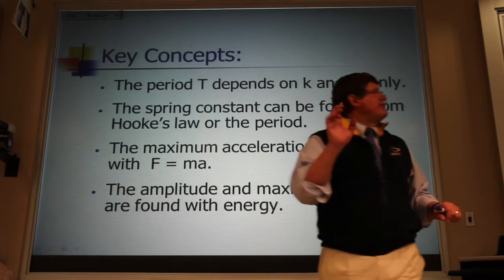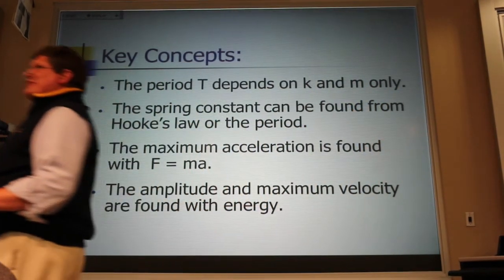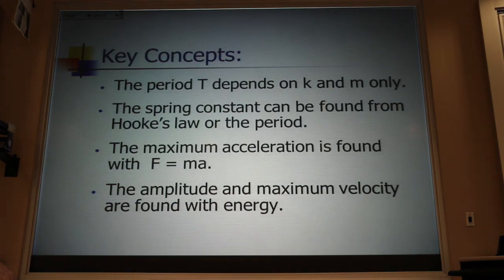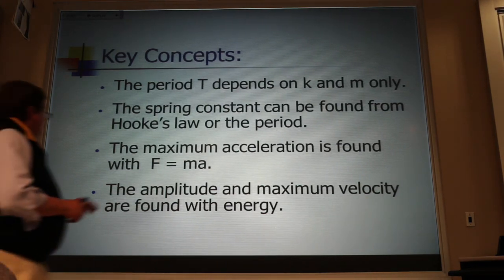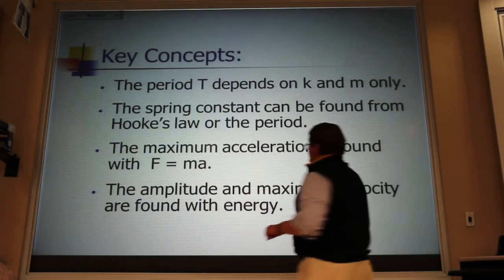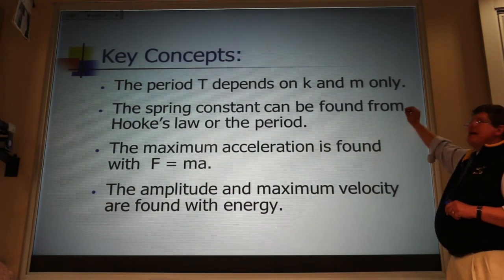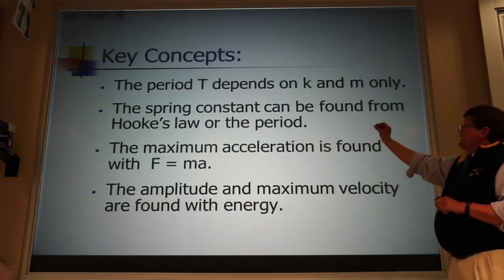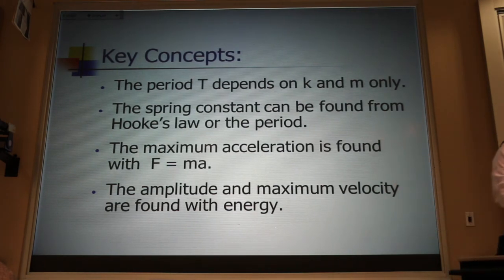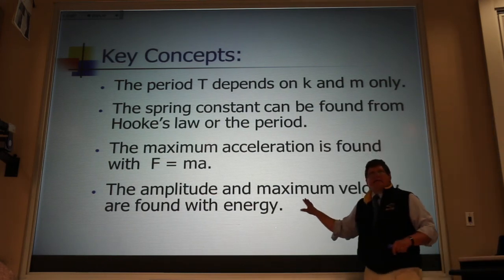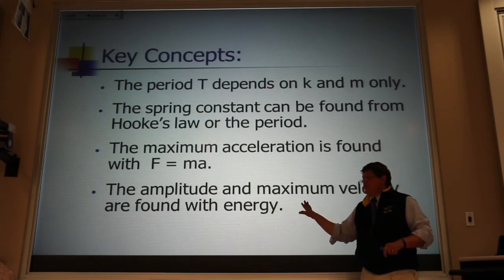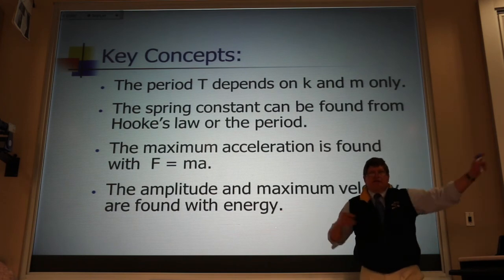I'm hushing you because I need seven minutes to talk about the last topic. These are the key ideas we've covered so far. The period only depends on the K value and the mass. The spring constant can be found two ways, the static and the dynamic way. The acceleration is always found through Newton's second law. And when we look for the amplitude and the maximum velocity, we use the energy equation.